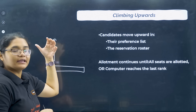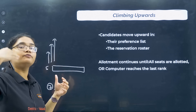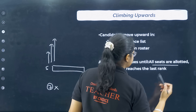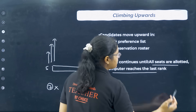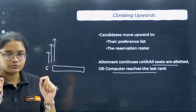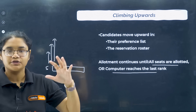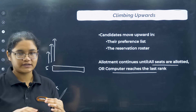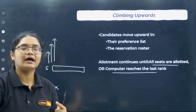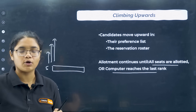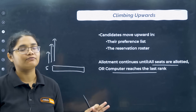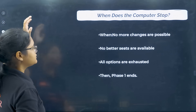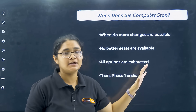Allotment continues until all the seats are allotted or the computer reaches the last rank. For example, if two lakh students have given the exam and the last rank is two lakh, the iterations continue until that student's seat is allotted, or until all students have received their allotment.